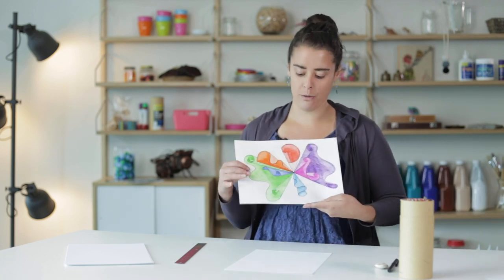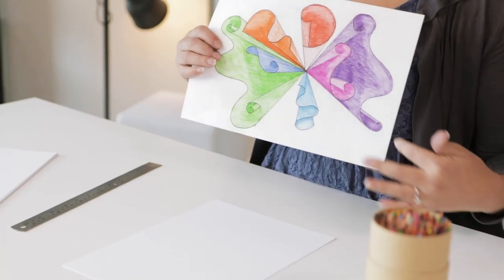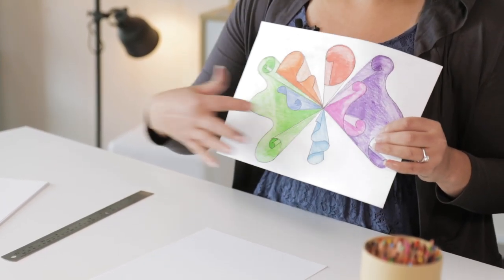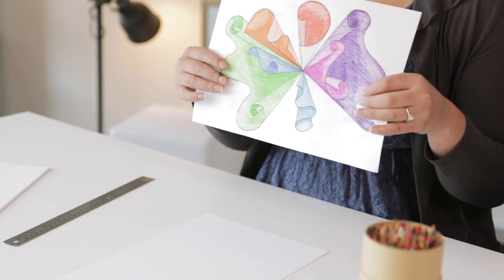A one-point perspective is a drawing method where things appear to get further away as they recede into a single vanishing point, which is usually on the horizon line. To give you an example of what we're creating, we've got these swirl shapes along the edge of the page and a vanishing point which is in the middle of the page.